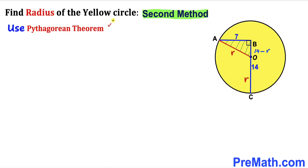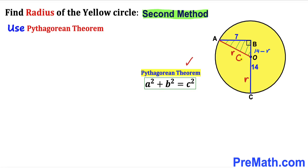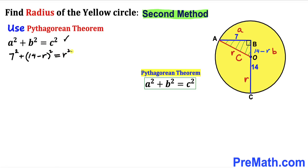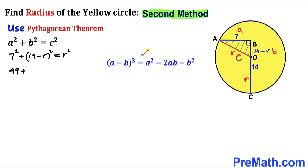We apply the Pythagorean theorem: a² + b² = c², where the sides are 7, (14 − r), and r (hypotenuse). This gives us 7² + (14 − r)² = r². Expanding: 49 + 196 − 28r + r² = r².